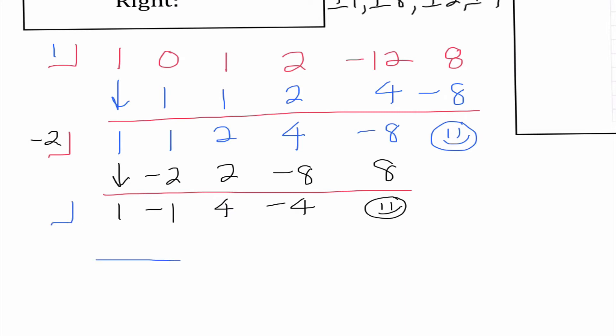If you guys look at your graph, you're going to notice something really strange happens at 1 — it looks like it bounces off the x-axis. This bounce tells us we have a double zero. If I was doing this without my graphing calculator, I would probably try negative 1, 2, 4, negative 4, and realize none of them work. If I try 1 again — just to remind ourselves — if a number works twice, that means it is a double zero and a bounce occurs.